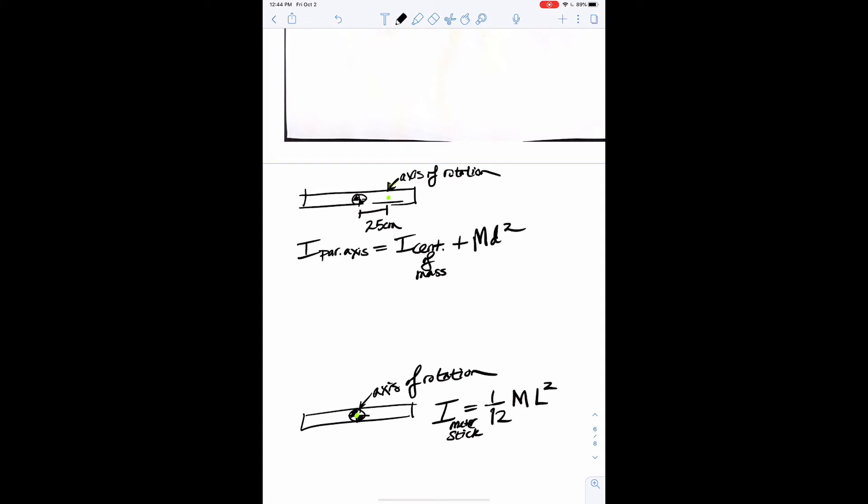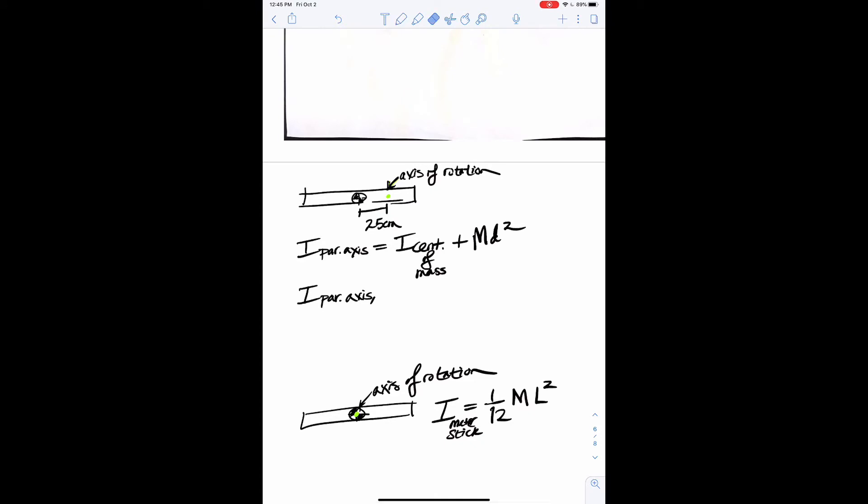All right. So we remember from last class that if the axis of rotation is right at the center of mass, then we know the I of the meter stick is equal to 1/12 ML squared. And so we want to see how that changes when we bring the axis of rotation out away from the center of the meter stick. So if we look back up here, then what did happen there? Well, using the formula we were given, it says I parallel axis equals I center of mass plus MD squared.